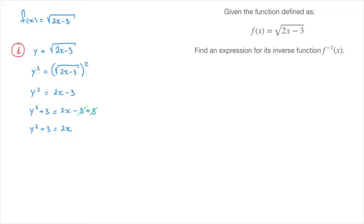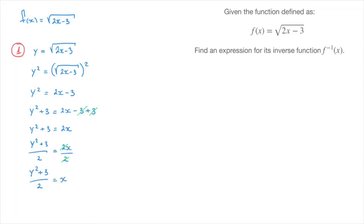We now see x is being multiplied by 2 and we're subtracting 3. So we add 3 to both sides: y squared plus 3 equals 2x. Then we divide both sides by 2: y squared plus 3 over 2 equals x, or x equals y squared plus 3 over 2. That's our first step done — we've now made x the subject.